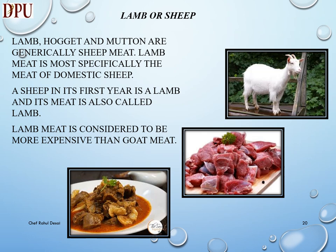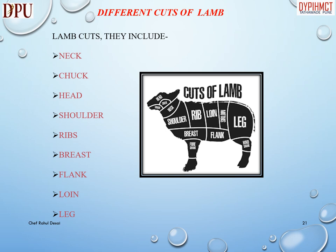Lamb, hogget, and mutton are generically sheep meat. Lamb meat is most specifically the meat of domestic sheep in its first year. Lamb meat is considered to be more expensive than goat meat. Different cuts of lamb include: head, neck, chuck, shoulder, ribs, breast, flank, loin, and leg.